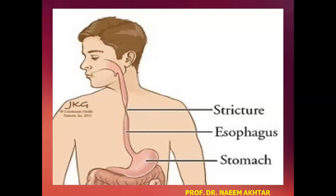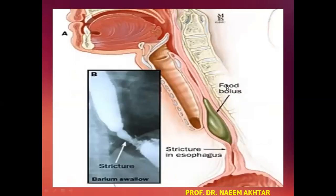In this figure you can see the esophagus, and in the middle one third of the esophagus there is narrowing of the esophagus — this narrowing is named as stricture. The food bolus here is not able to pass this narrowing of the esophagus. The bolus is unable to move down towards the stomach due to this stricture.